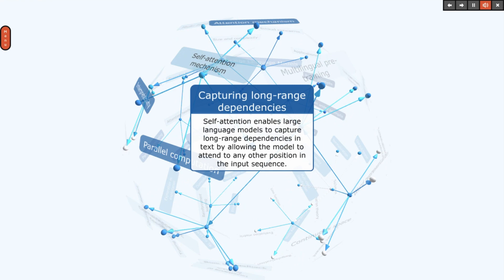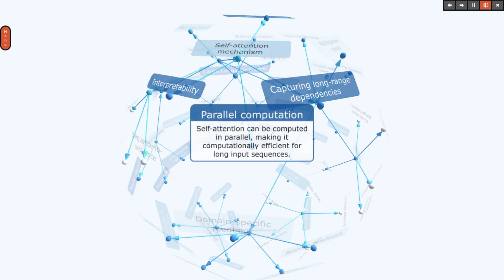Self-attention enables large language models to capture long-range dependencies in text by allowing the model to attend to any other position in the input sequence. Self-attention can also be computed in parallel, making it computationally efficient for long input sequences.